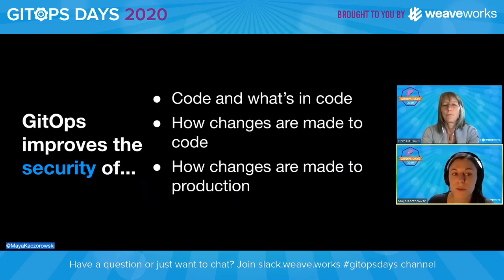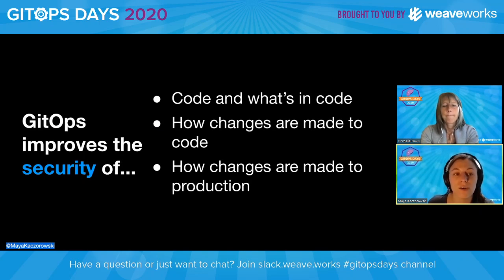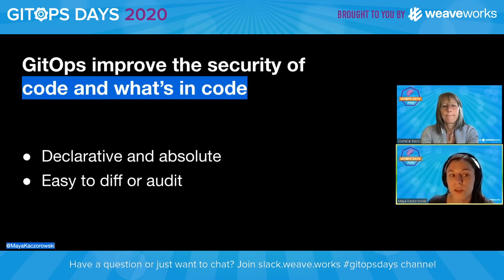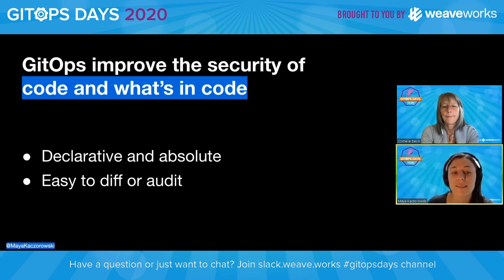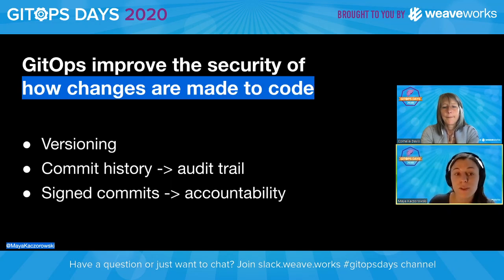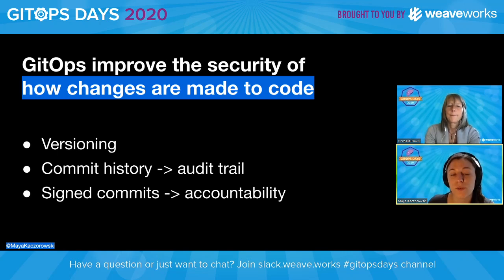GitOps specifically improves the security of several aspects of your development pipeline: your code itself and anything else you keep in code, how you make changes to that code, and how you make changes in production. Using Git means you have a static file you can compare your requirements to. If your compliance requirements are defined in YAML, it's pretty easy to check if you're meeting them. If your access policies are declared in a config file and that's the only way to get access, you actually know who has access to what and can verify that in code. When you make changes, you have versioning to know what you shipped and the ability to roll back. You have a commit history, which is effectively an audit trail, and you can use signed commits to give accountability and traceability to track who made changes.